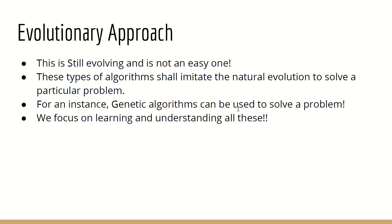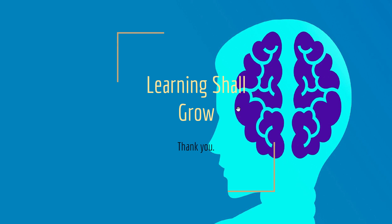The final approach is evolutionary learning, which is still evolving and the toughest area people are working on. If we take genetic algorithms into the picture — which have natural evolution — and implement them in machine learning, we call it the evolutionary approach. The learning shall grow. I hope this playlist is useful. If you have suggestions or comments, please type them in the comment section, subscribe if you like the content, and share it with your friends. Thank you very much.